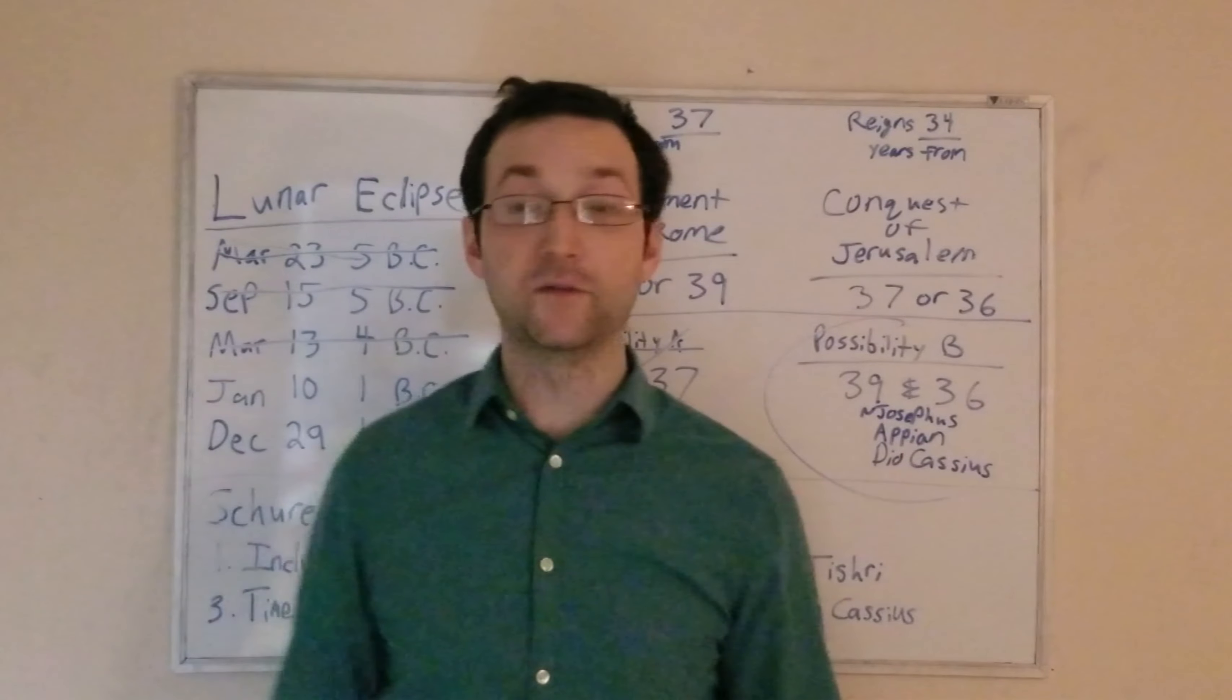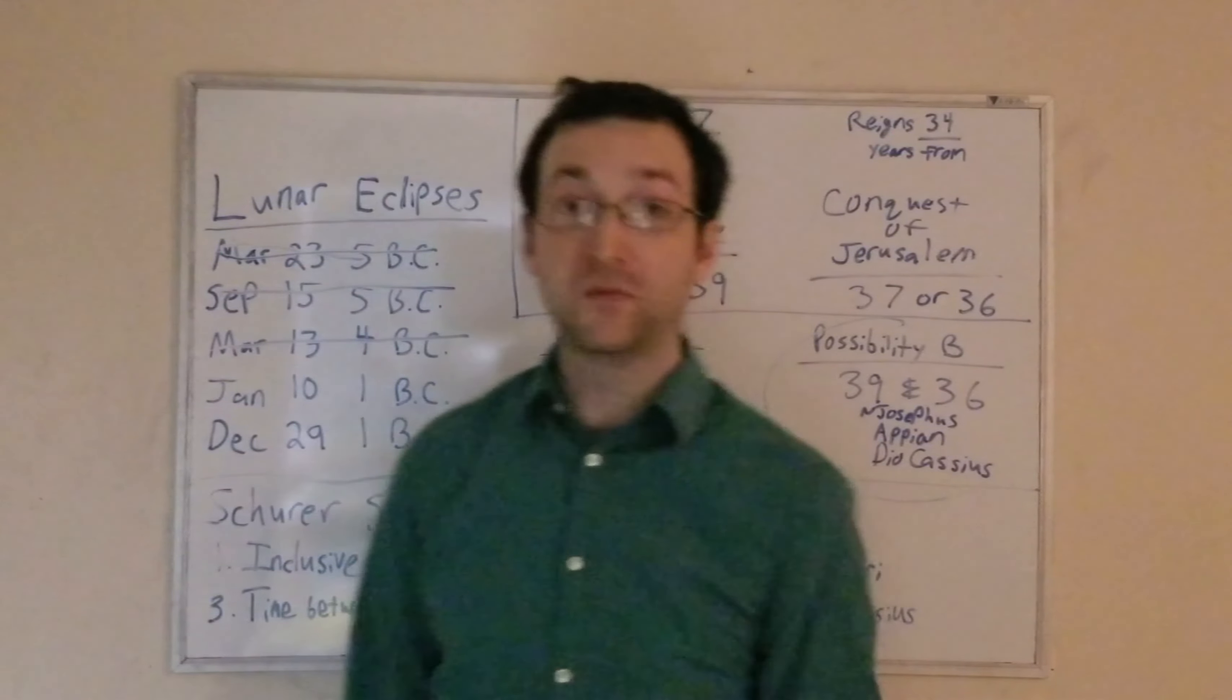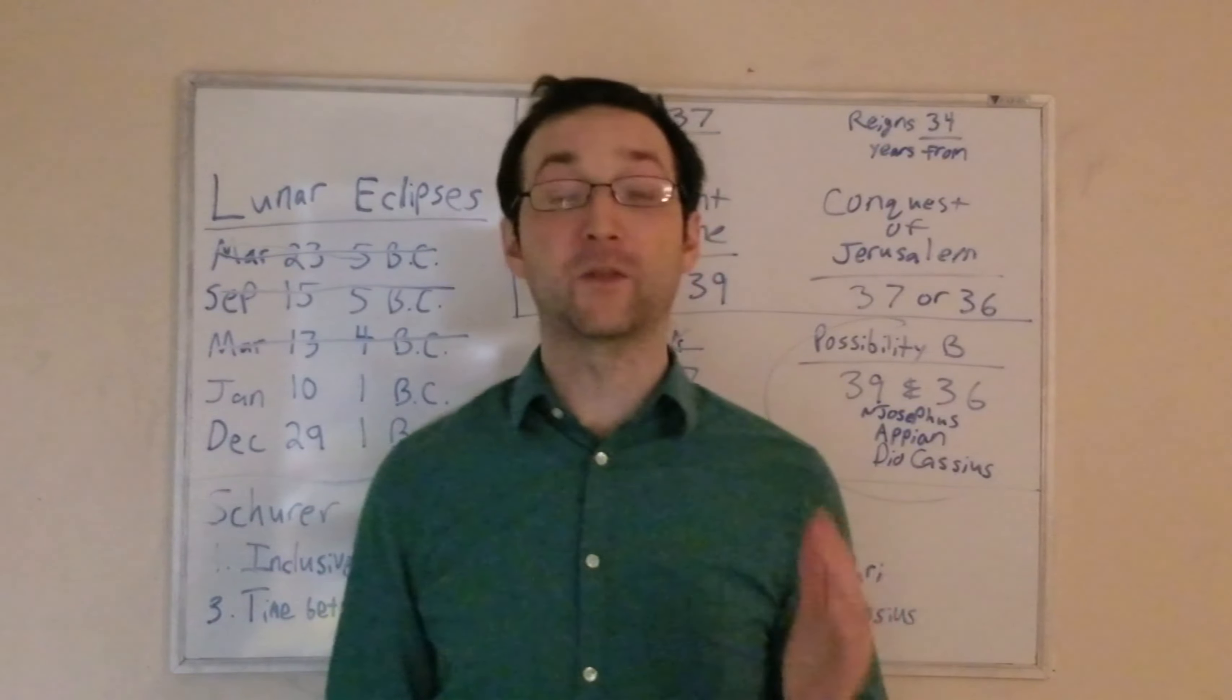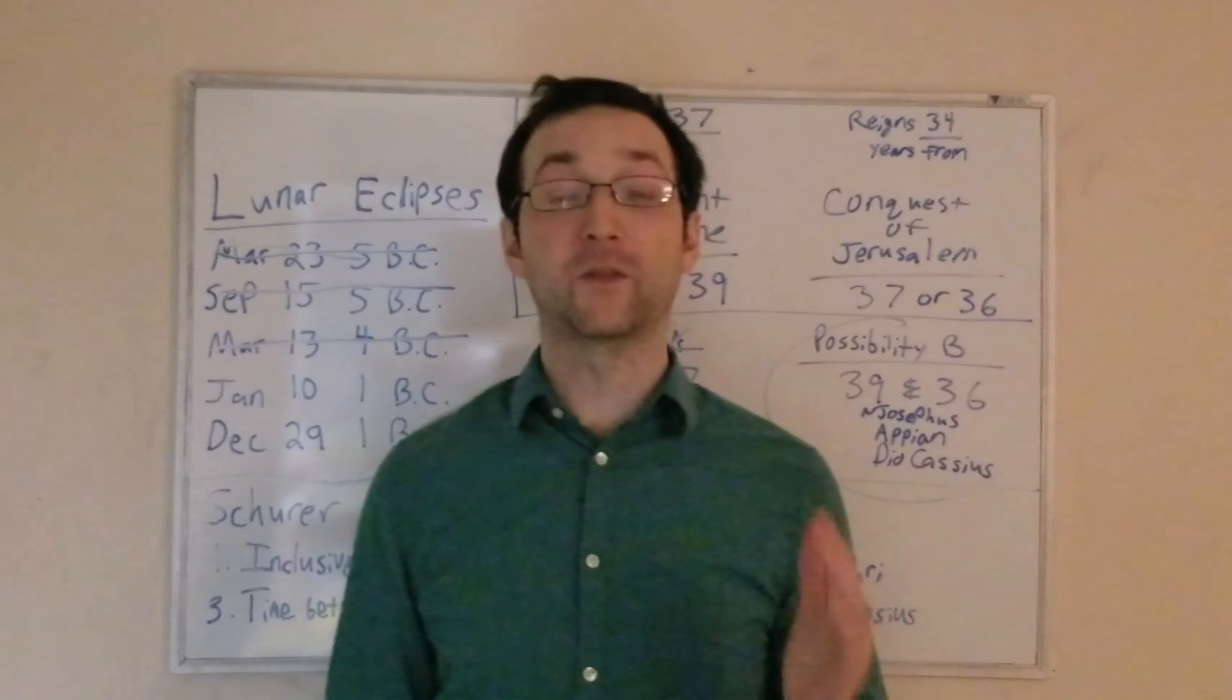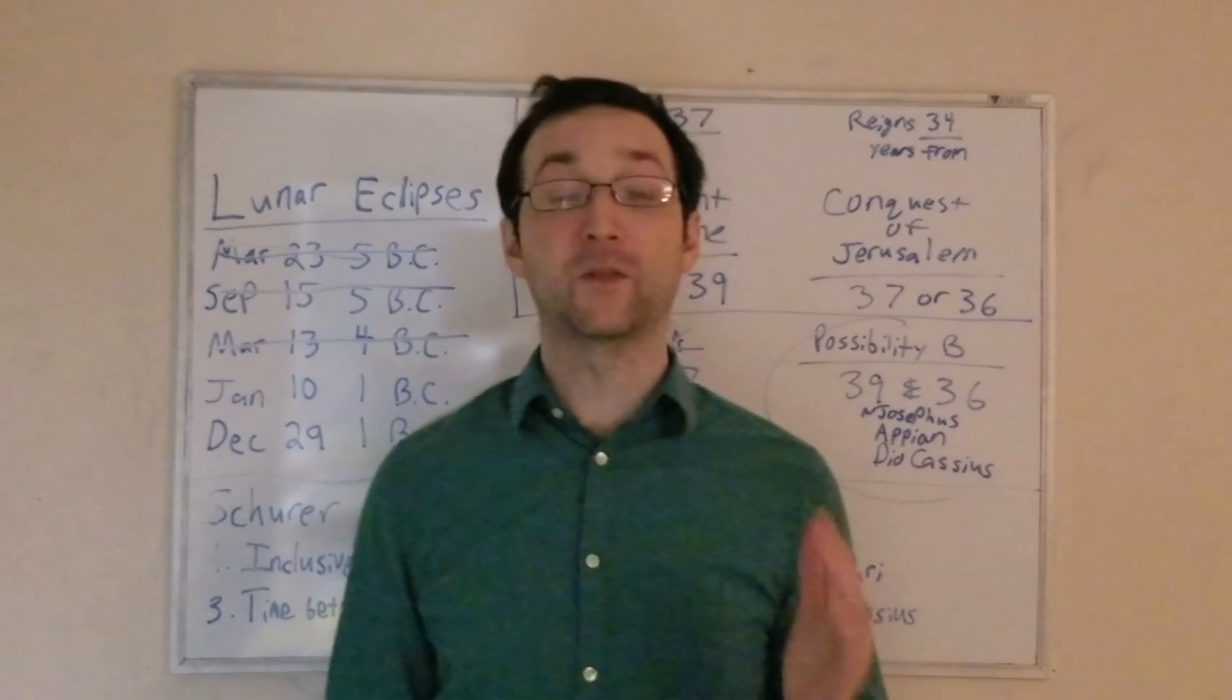You get the same thing with Tishri, just move everything six months. In that case, his 37th year went from the fall of 2 BC to the fall of 1 BC. Same exact story for both of these eclipses.